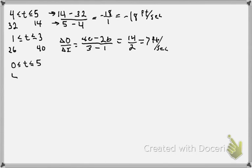Last one, at time 0 is at 4 feet, at time 5 it's at 14 feet. So we have 14 minus 4 over 5 minus 0, which gives us 10 over 5, or 2 feet per second.